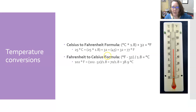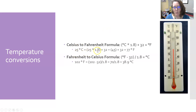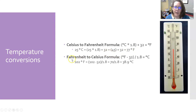For temperature, there are a couple of formulas. Celsius to Fahrenheit: multiply degrees Celsius by 1.8, then add 32. For example, room temperature: 25 times 1.8 is 45, plus 32 is 77°F. Fahrenheit to Celsius: subtract 32, then divide by 1.8. So 102°F minus 32 is 70, divided by 1.8 is 38.9°C for that fever reading.